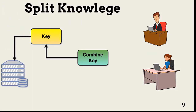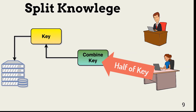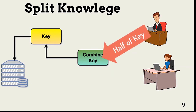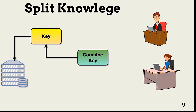In split knowledge, the key or password to the key is split into multiple pieces. Each piece is secured by a separate person. In this example, Adam and Alice must each provide their half of a key in order to decrypt the data.